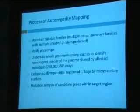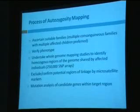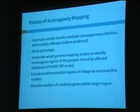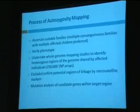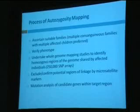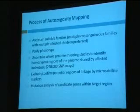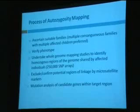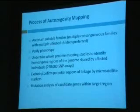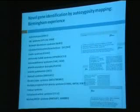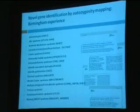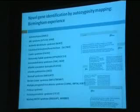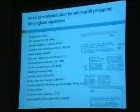Having identified areas of homozygosity, we use microsatellite markers mapping to within the homozygous regions to study the whole family and see whether we have autozygosity by descent, or whether the SNPs have been uninformative. Having identified a region, we then undertake mutation analysis of candidate genes within the targeted interval. Using this standardised, relatively straightforward strategy, we've been able to identify genes for large numbers of genetic disorders.